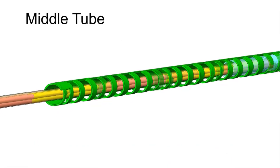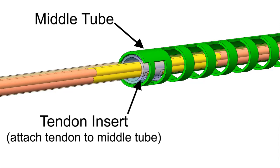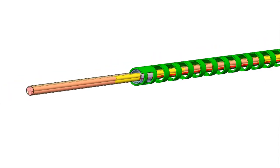The middle tube is notched to allow for bending compliance and is bent through actuation of a 76 micron nitinol tendon, which is secured to a tendon insert.